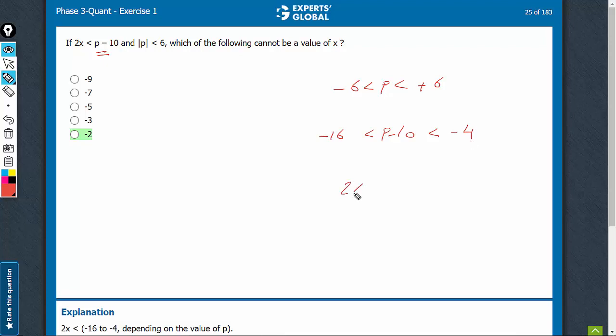And then we know 2x is less than p minus 10. We have to look at what cannot be a value of x. p minus 10 is greater than minus 16, but 2x is smaller than p minus 10.